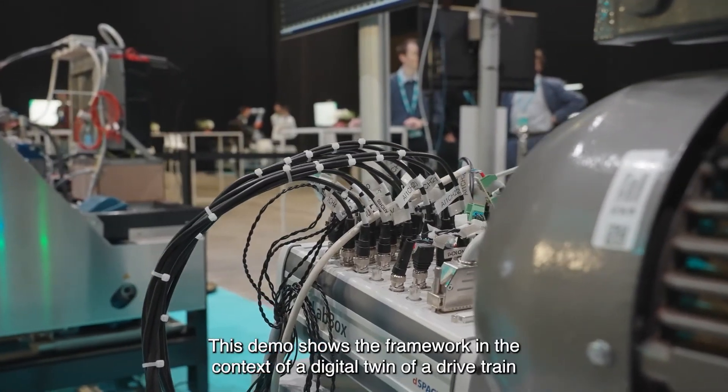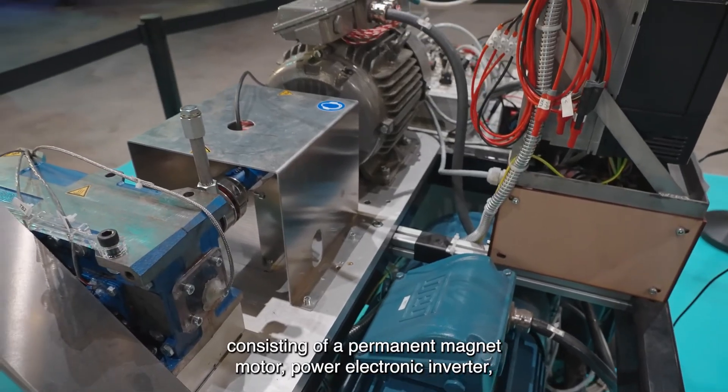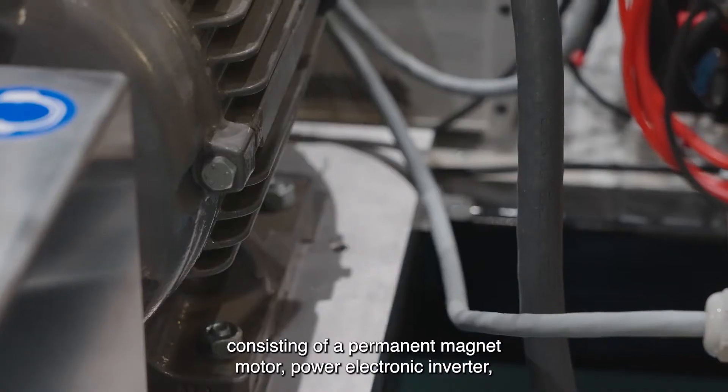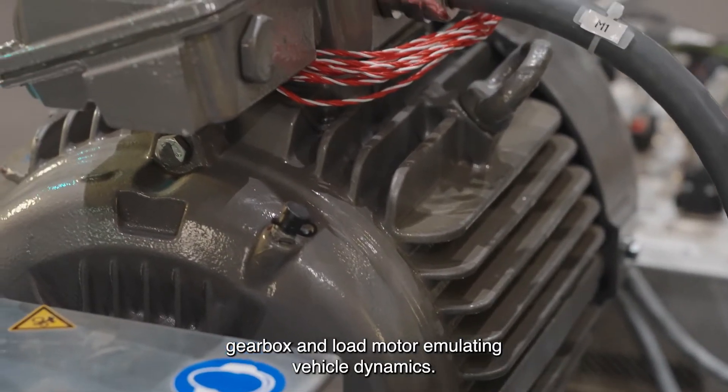This demo shows the framework in the context of a digital twin of a drivetrain consisting of a permanent magnet motor, power electronic inverter, gearbox, and load motor emulating vehicle dynamics.